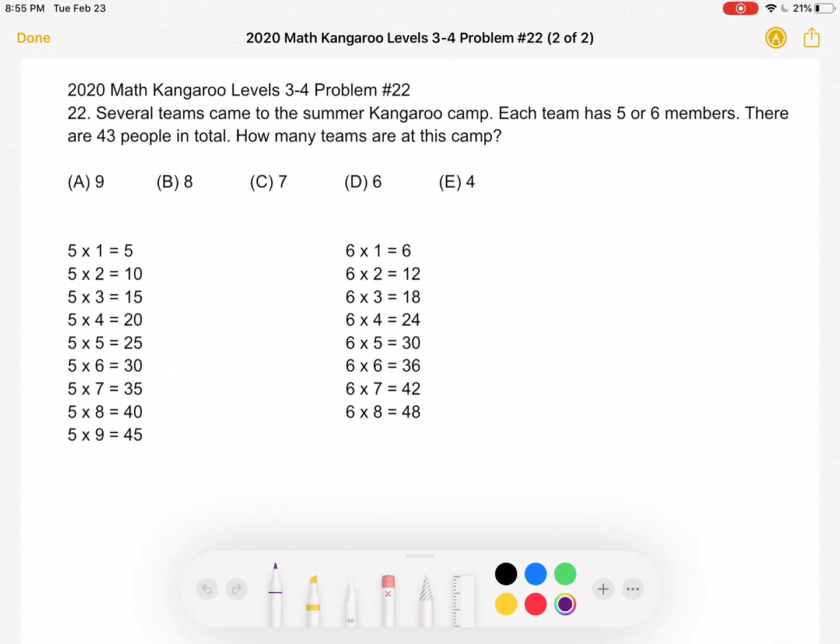To start, each team has either 5 or 6 members, but we don't know how many teams we have of 5 people or how many teams of 6 people. That's what we're trying to figure out. We'll have a certain amount of teams with 5 people, and that number of 5 people teams times 5 people per team plus